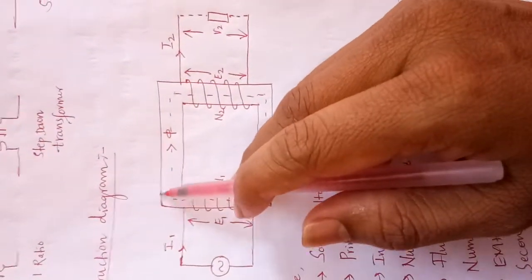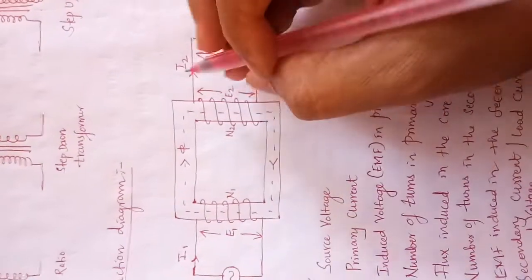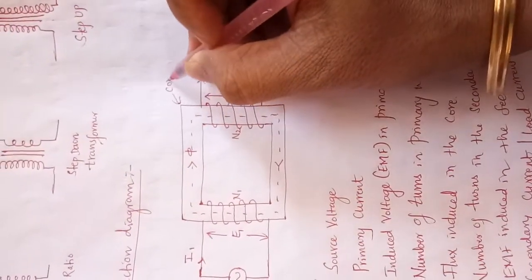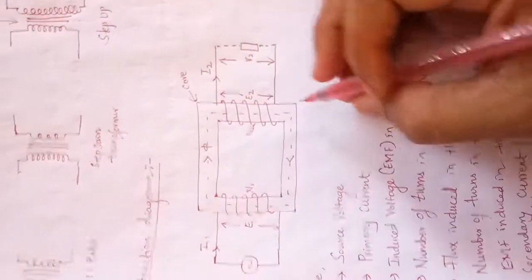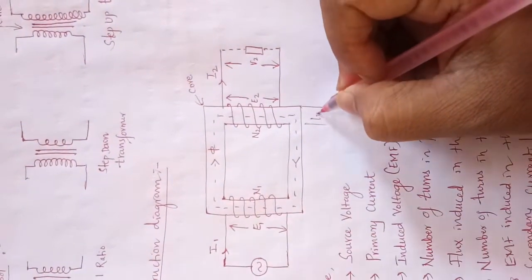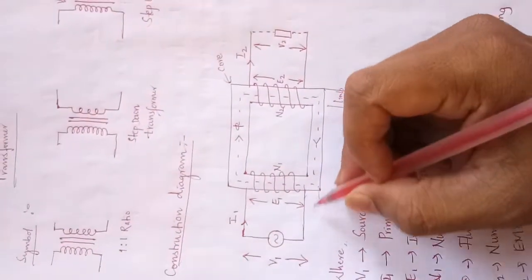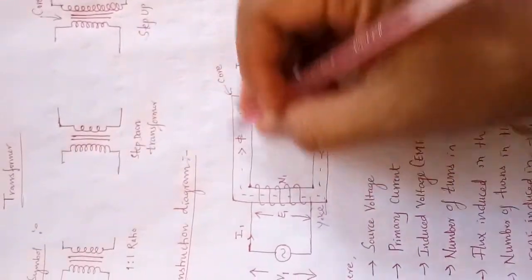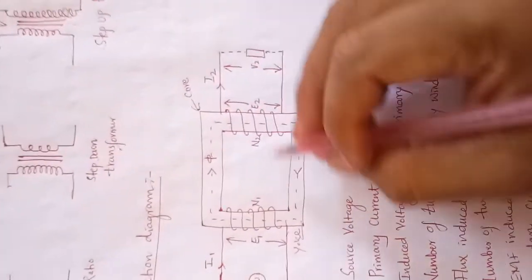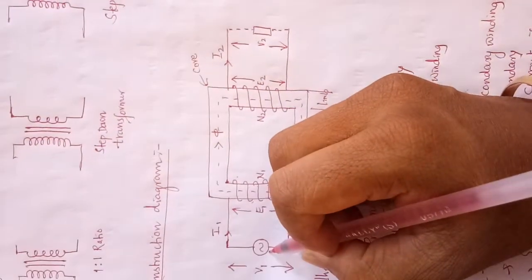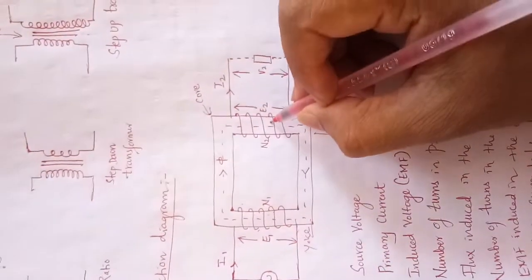Now let me show you the constructional diagram of the transformer. This particular rectangular portion is called the core, and this core has one window on both the limbs. The vertical portion is called a limb and the horizontal portion is called a yoke, and together it is called the core. On both the vertical limbs the winding is wound.